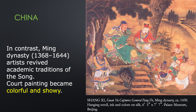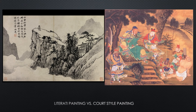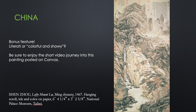Here's a bonus feature showing the kinds of things Mongol emperors did like. They didn't like that subtle stuff — instead, in the Ming Dynasty, this kind of painting was very colorful and showy with flamboyant costumes and a lot of emphasis. So we've kind of gone past that subtle moment. There's a comparison here: literati painting versus the court style painting — one still subtle, the other very flashy. Be sure to enjoy the short video journey into this painting that I posted on Canvas.